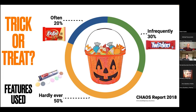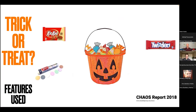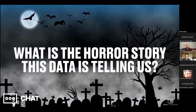Infrequently used doesn't mean all bad — I think of a fire extinguisher in my house, hardly ever used but still good. But there's probably some problem in that 50% and 30% range. As bad as candy corn — that was my contender. Just like features, this is what can happen, and it's a lot of waste. What's the story this data is telling us — 20% often used, 30% infrequently, 50% hardly used? What's the horror story?